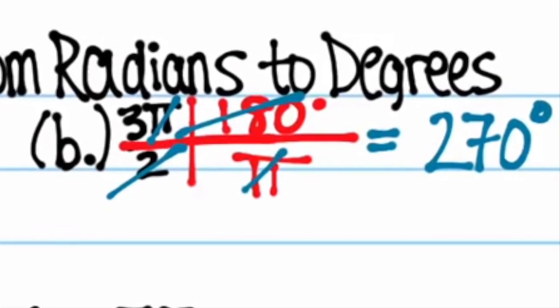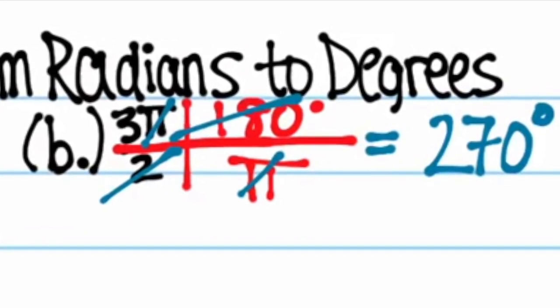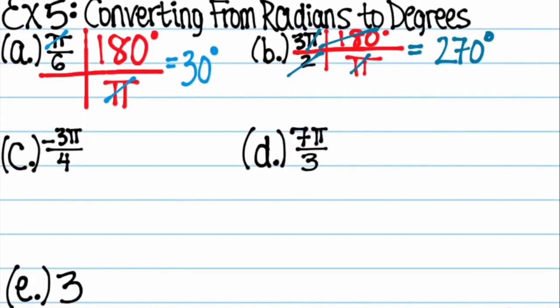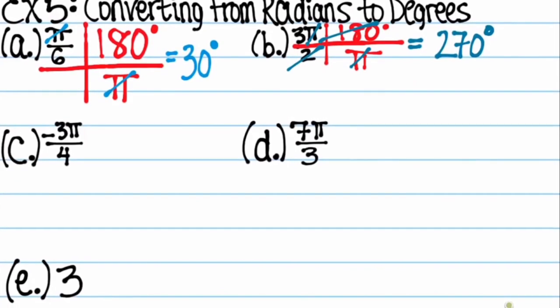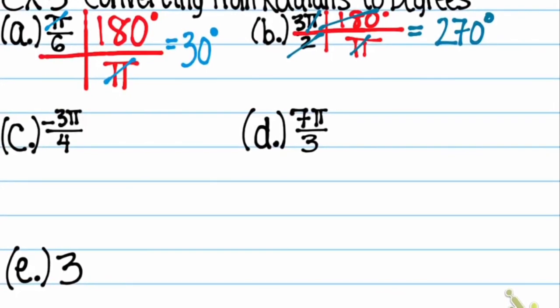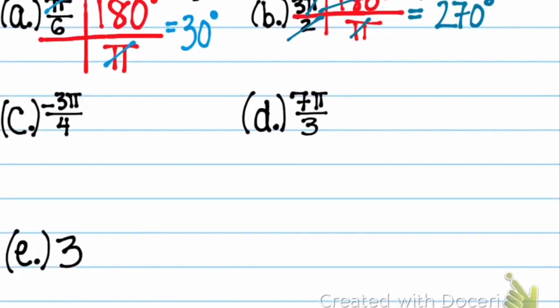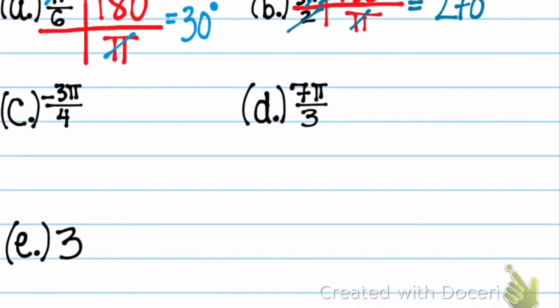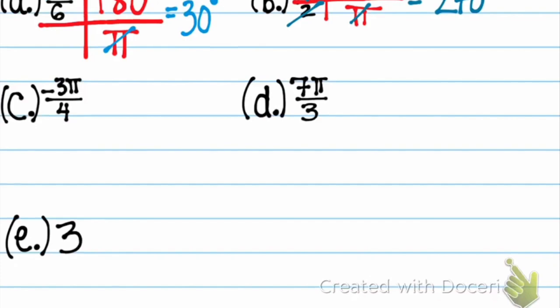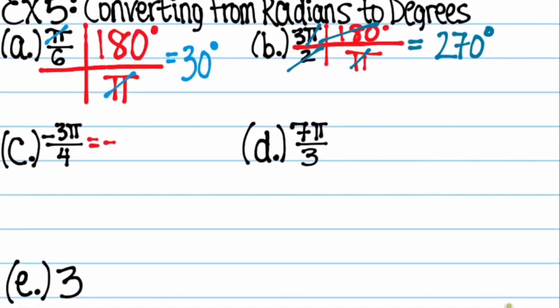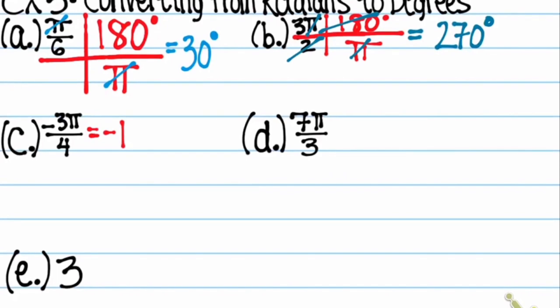That's all there is to it. After you look over a and b again, I want you to try examples c, d, and e on your own. Example e, I want you to turn into a decimal and round out to the tenths place. Press pause and give these a good try. Write out all your work and check your answers when you're ready.